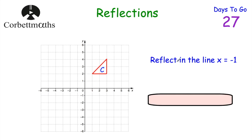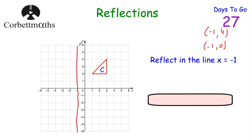Here we've got triangle C and we've been asked to reflect it in the line x = -1. First, let's draw the mirror line: x = -1 is a vertical line passing through all coordinates with an x-coordinate of -1, such as (-1, 4) or (-1, 0). That's our mirror line. To reflect C, I focus on the three corners. For each point, I measure how many squares it is from the mirror line and go the same distance on the other side. Joining up the new points gives us the reflected triangle.